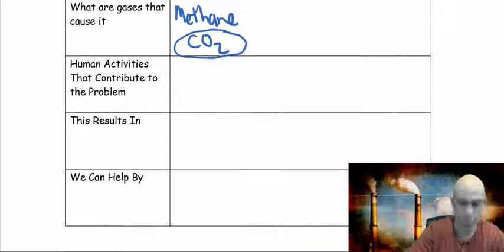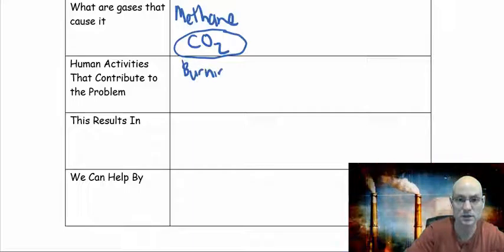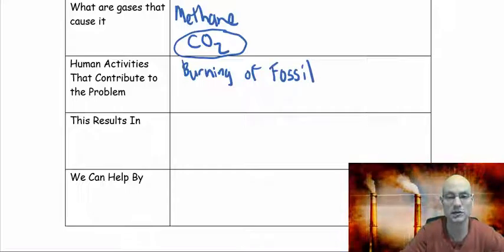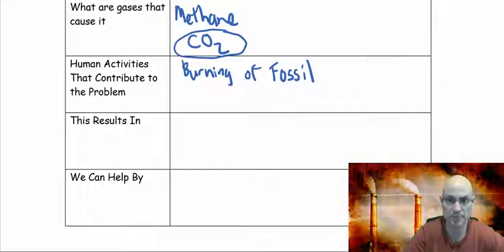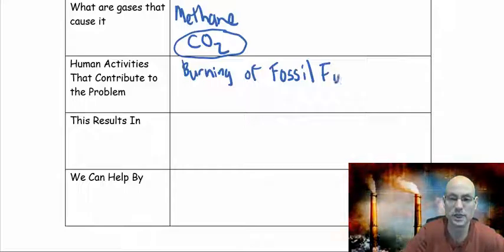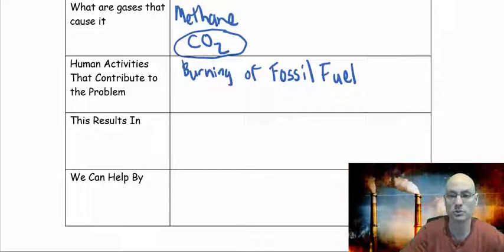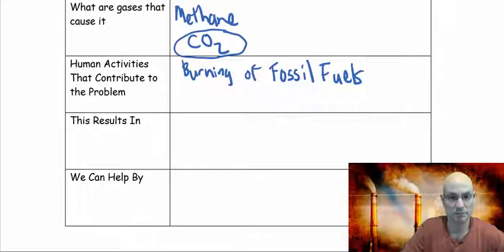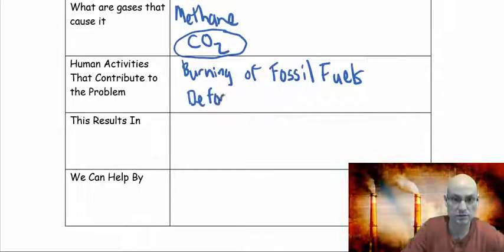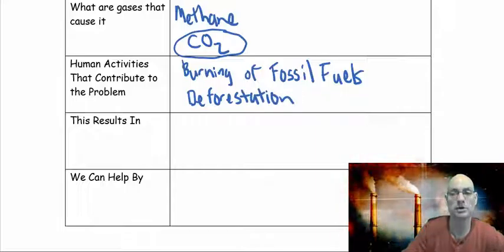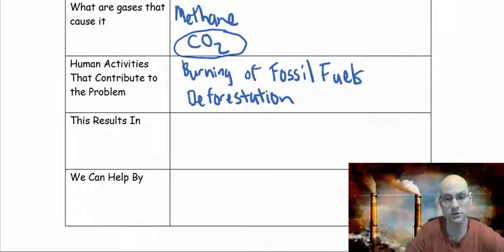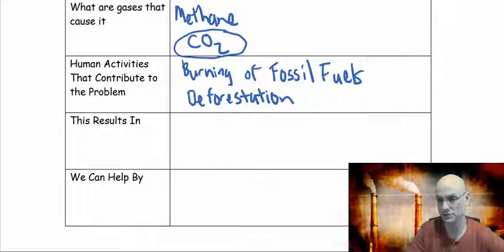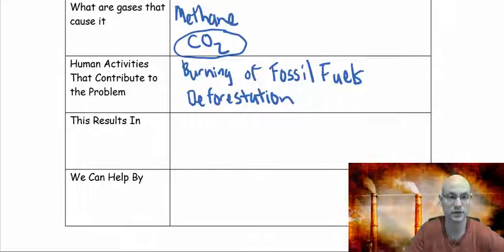What are some human activities that contribute to this? A lot of burning of fossil fuels. Fossil fuels come from organic compounds, so they have carbon in them. We're burning them and that removes the carbon and puts it into the form of CO2 through driving cars, factories, etc. Also, we have deforestation because plants take CO2 out as part of photosynthesis. If we have less trees, we can take less CO2 out of the atmosphere.